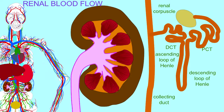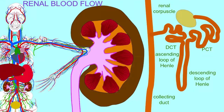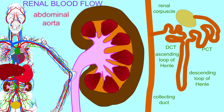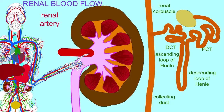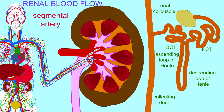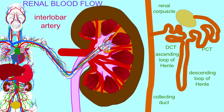The nephrons of the kidney have a unique blood flow. If one were to trace the flow of blood to a nephron and back, beginning with the abdominal aorta, one would follow the renal artery as it enters a kidney. The renal artery then branches into five segmental arteries, and in the renal pelvis, these segmental arteries divide into several interlobar arteries.